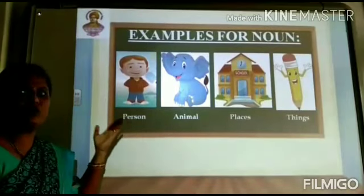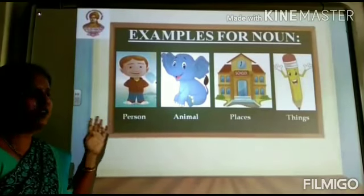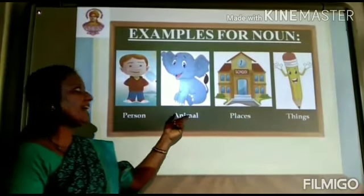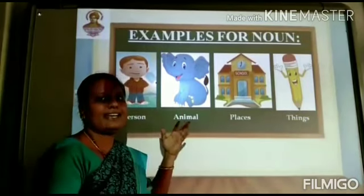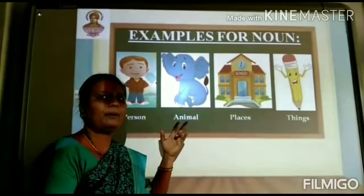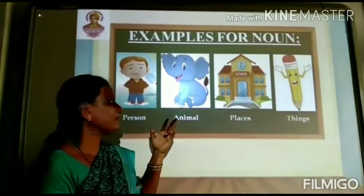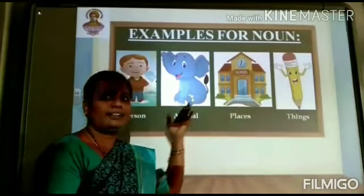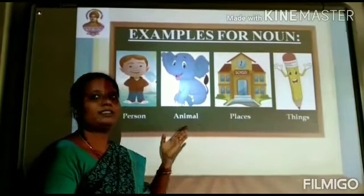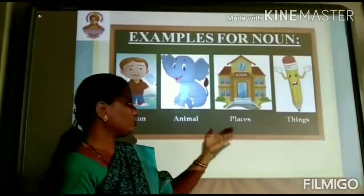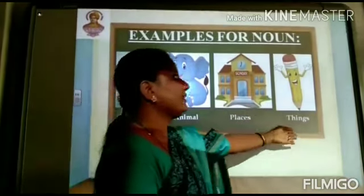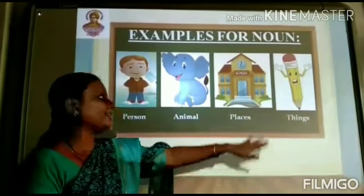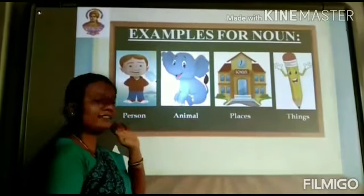The boy name could be Raju or Ram. Next one is animal — elephant, cat. You can name many more examples also. Next is place — school, hospital, park, zoo. And the things: it is a pencil, pencil box, eraser, sharpener, like this.